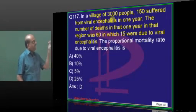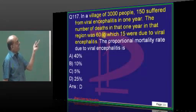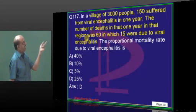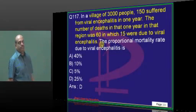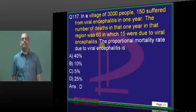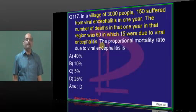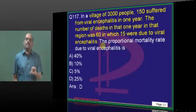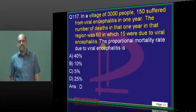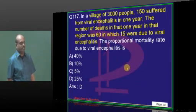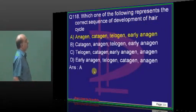150 had encephalitis, but deaths — total deaths were 60, out of which 15 are due to that. Proportional mortality means deaths due to a given cause divided by total number of deaths. 15 by 60 becomes 1 by 4, which is 25 percent.